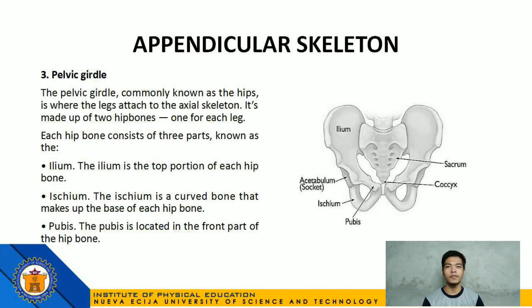Number 3: Pelvic girdle, commonly known as the hips, is where the legs attach to the axial skeleton. It is made up of 2 hip bones, one for each leg. Each hip bone consists of 3 parts: the ilium, which is the top portion of each hip bone; the ischium, a curved bone that makes up the base of each hip bone; and the pubis, located in the front part of the hip bone.